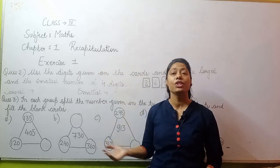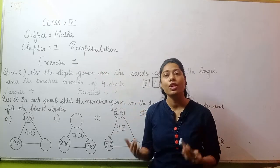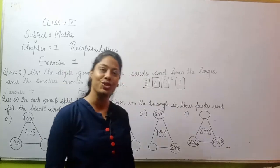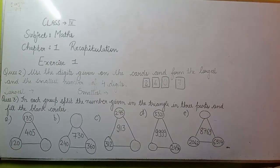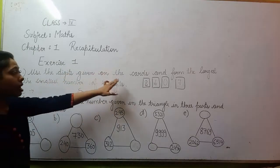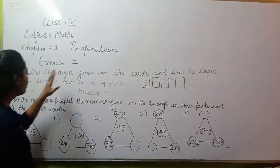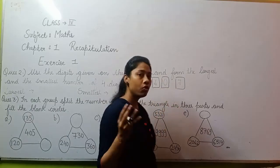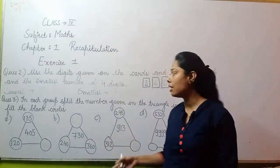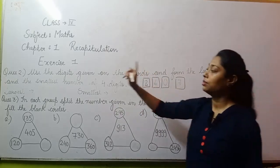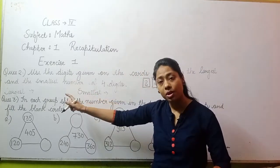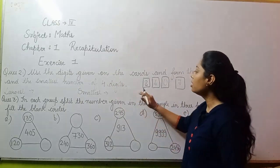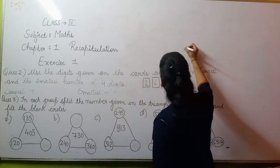We were solving it. Question 1 we had already solved in the previous video. In this video, we will be talking about question 2. So let's start the question. The question says, use the digits given on the cards and form the largest and the smallest number of 4 digits.